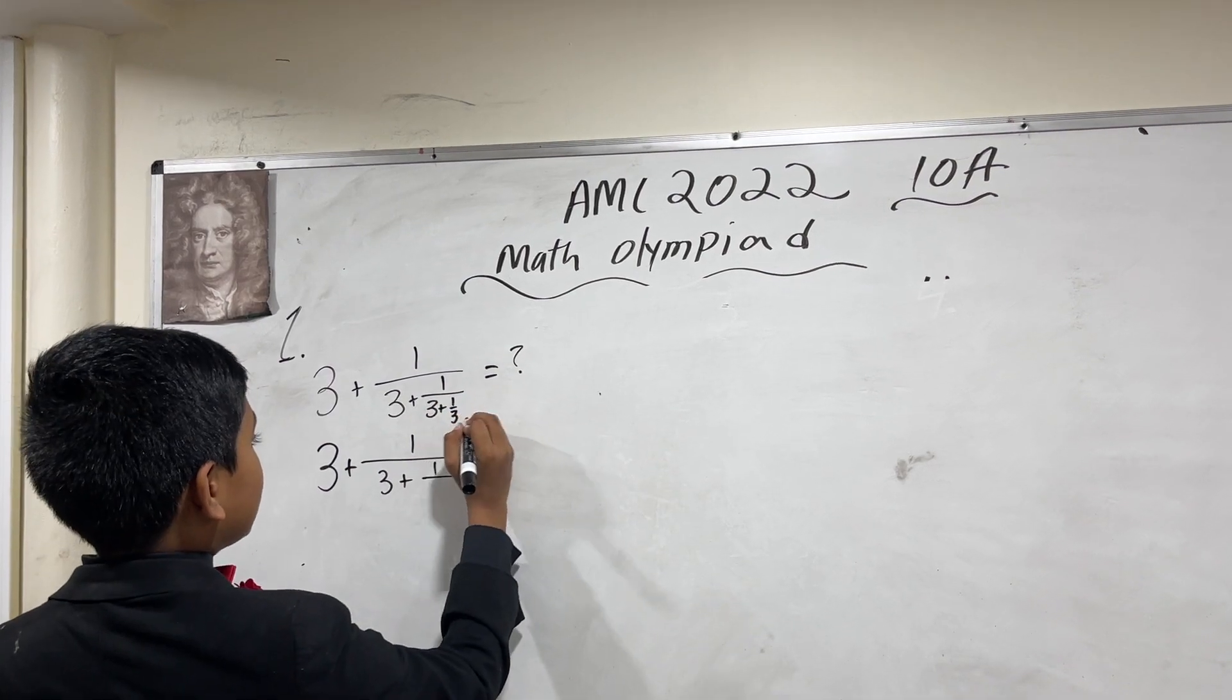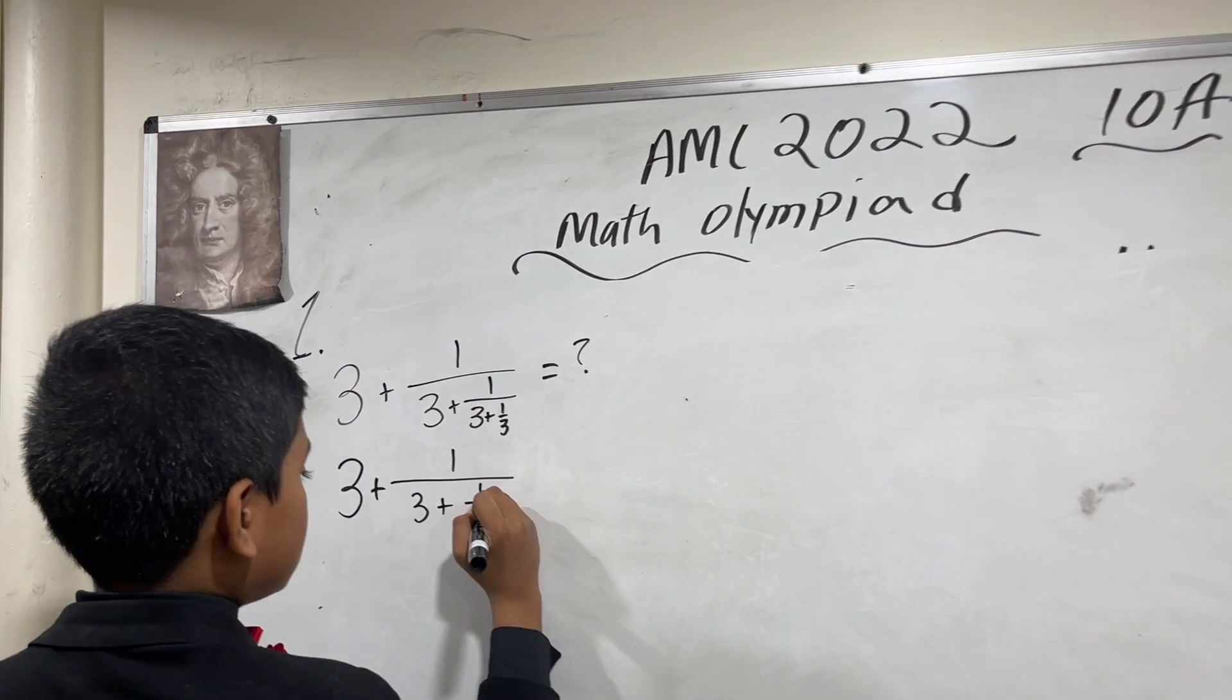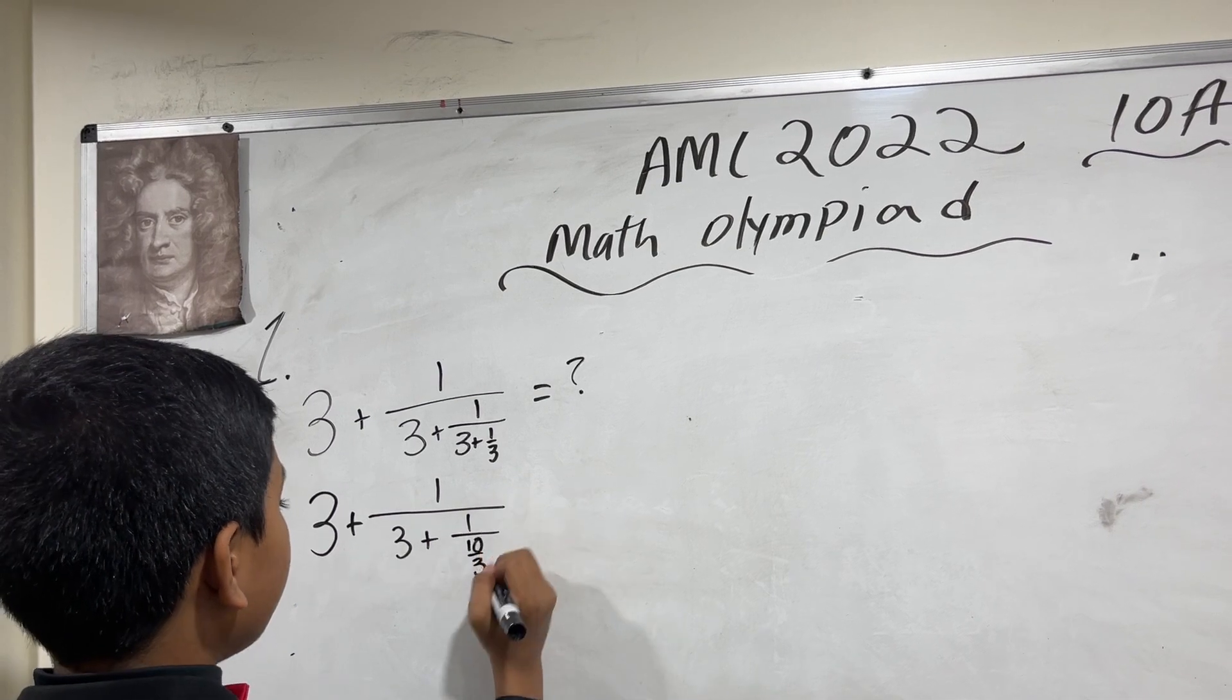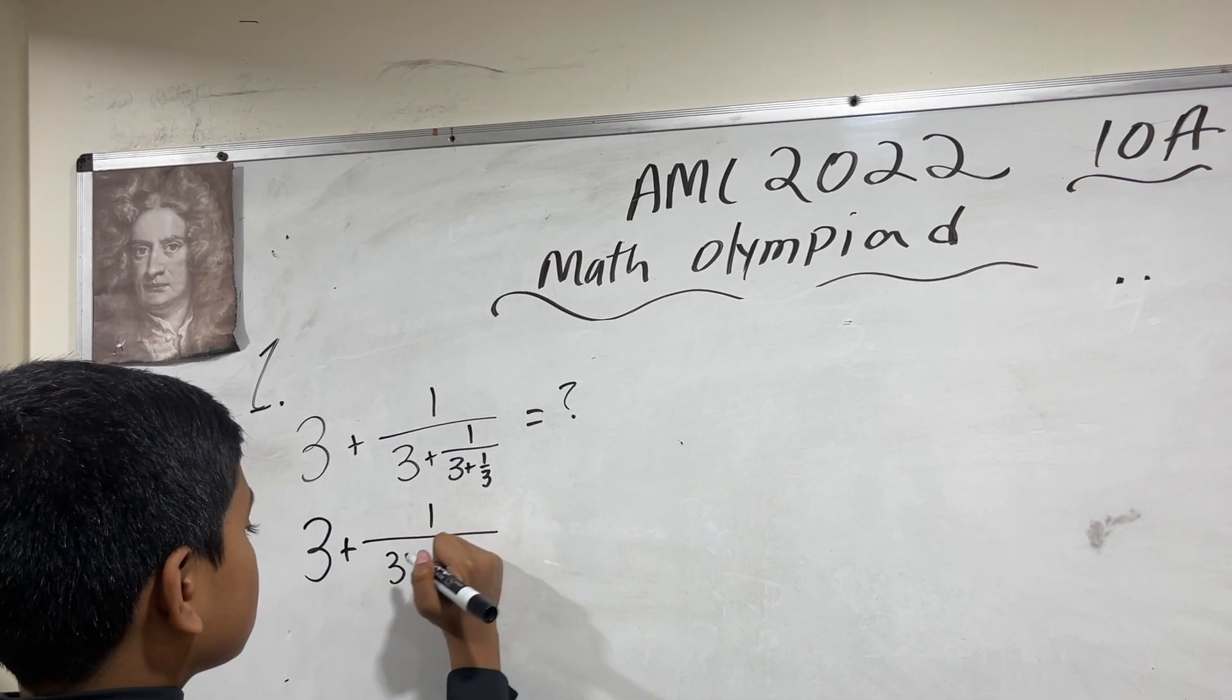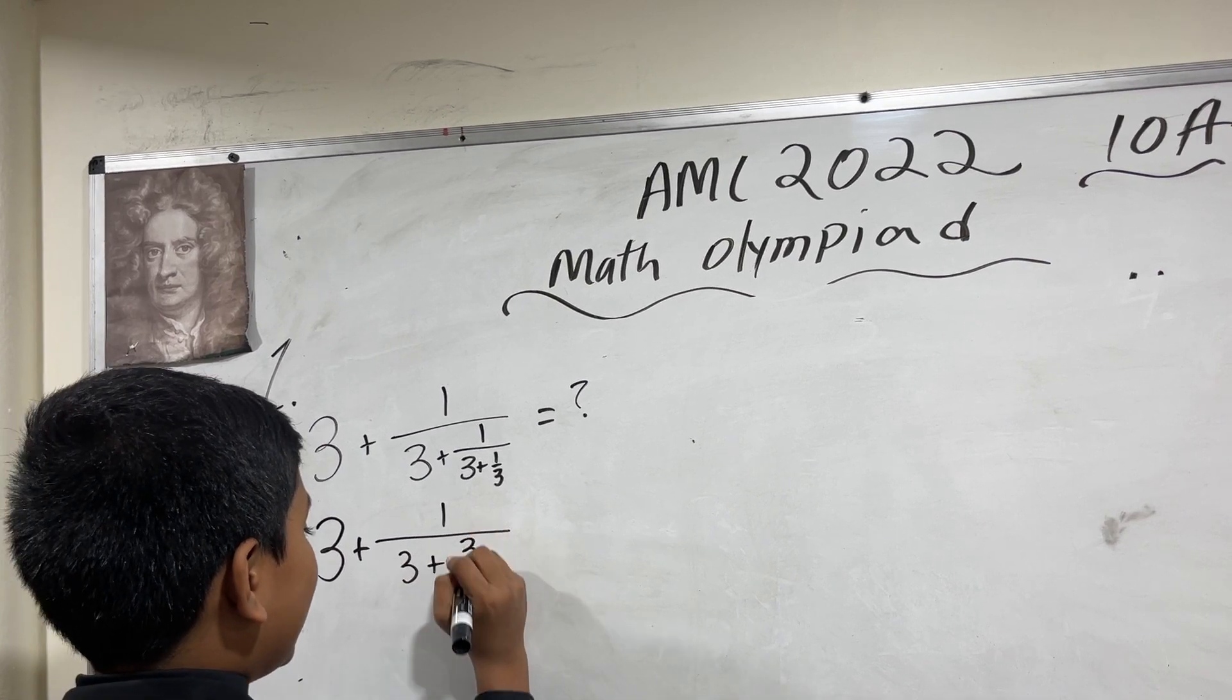So, 3 is actually 9 thirds plus 1 third is 10 thirds. The inverse of any fraction makes it just the reciprocal, so 1 over 10 thirds is 3 tenths.